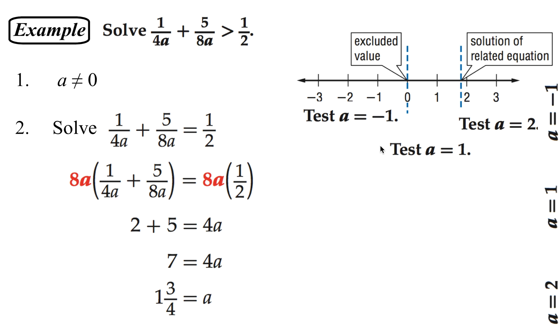And when we say test that, what we're going to do is put it back into the equation and see if it gives us a true statement. So here is A equals negative 1. We're going to plug in a negative 1 everywhere you see the letter A. And this gives us a false statement. So any solutions to the left of 0 don't work. So we've tested that one.